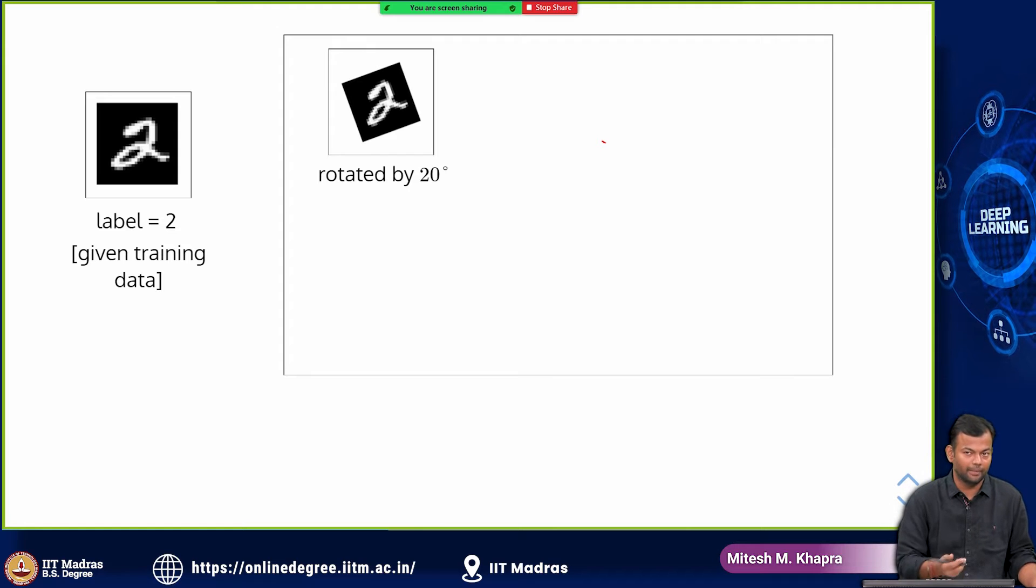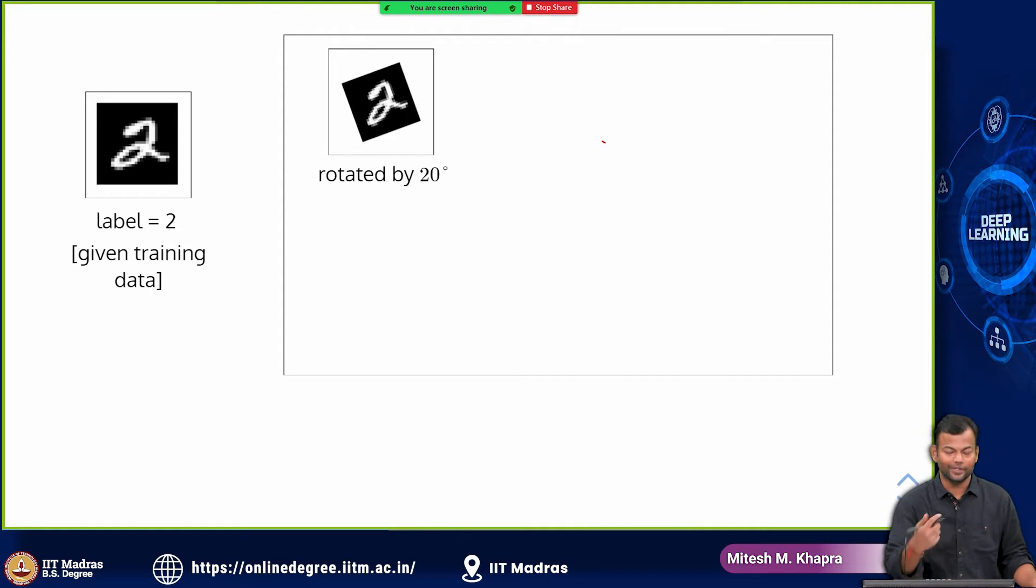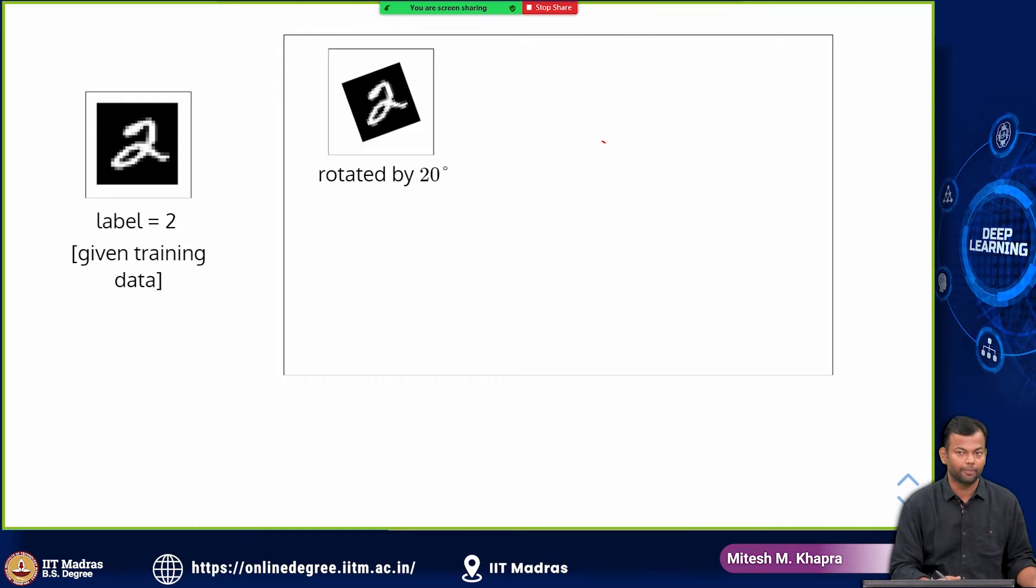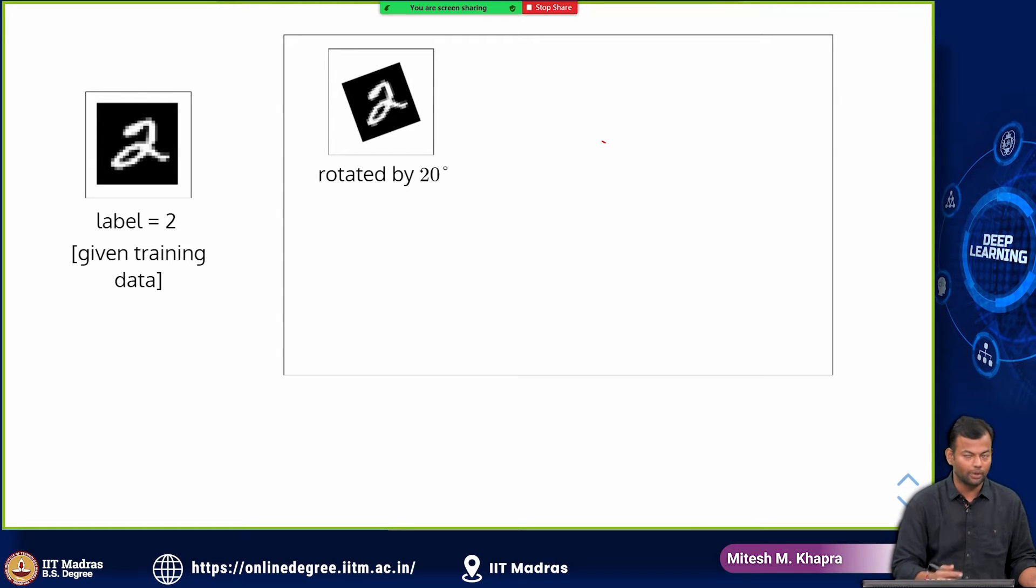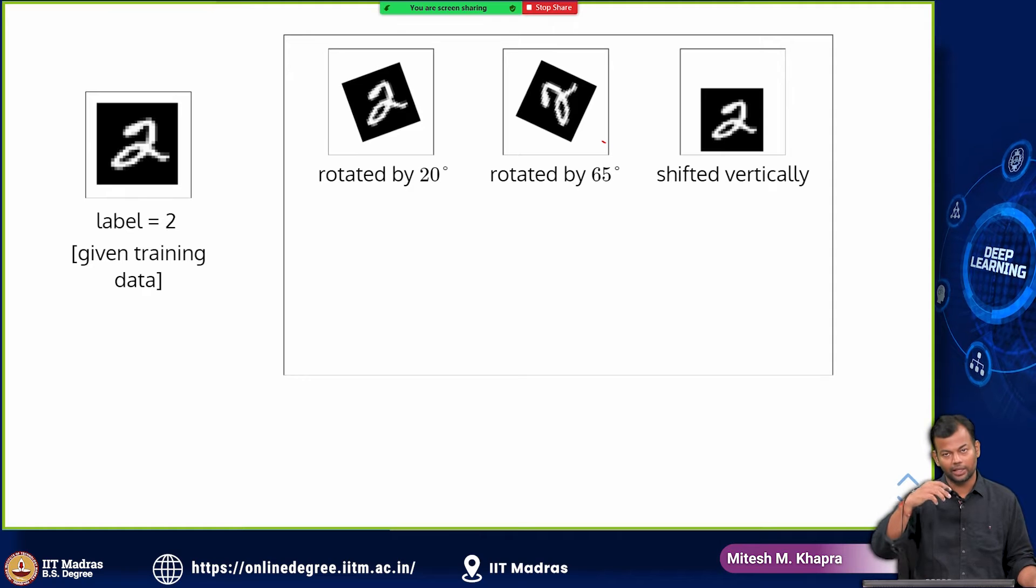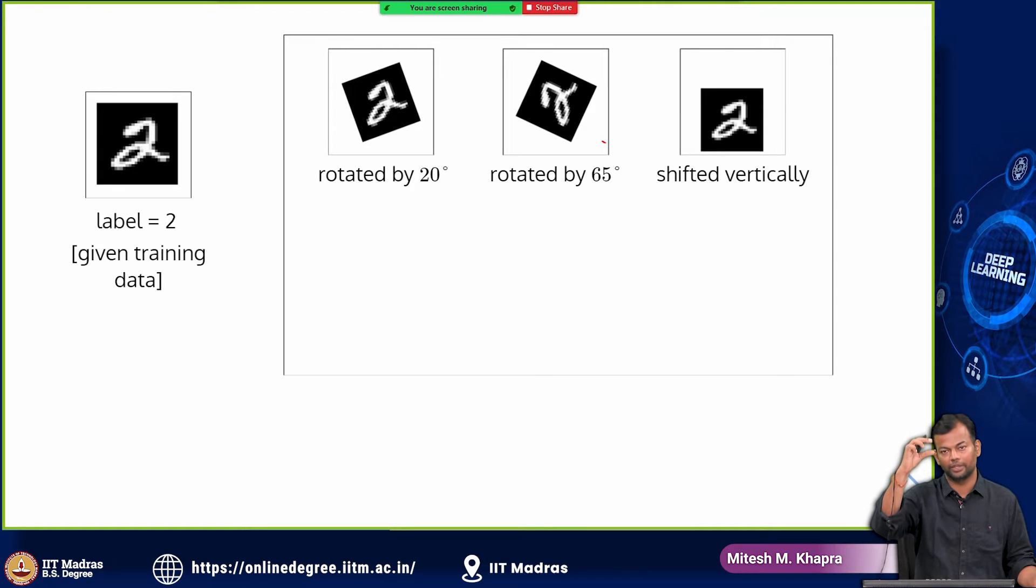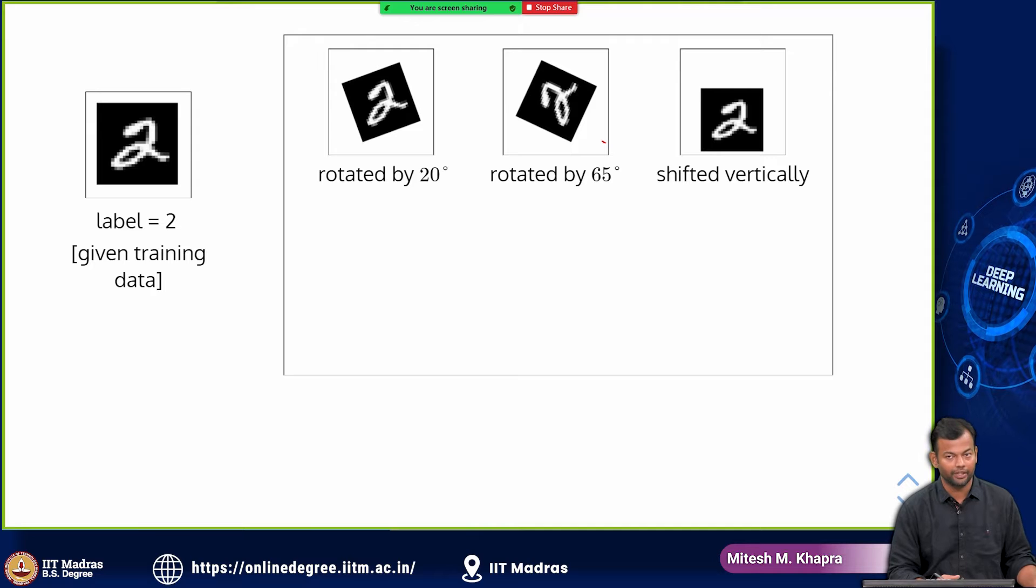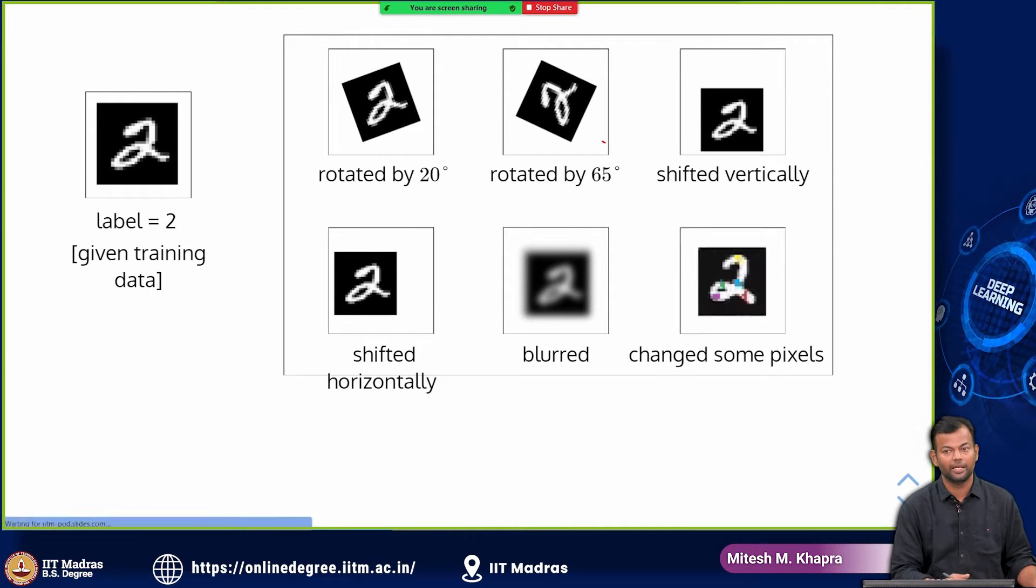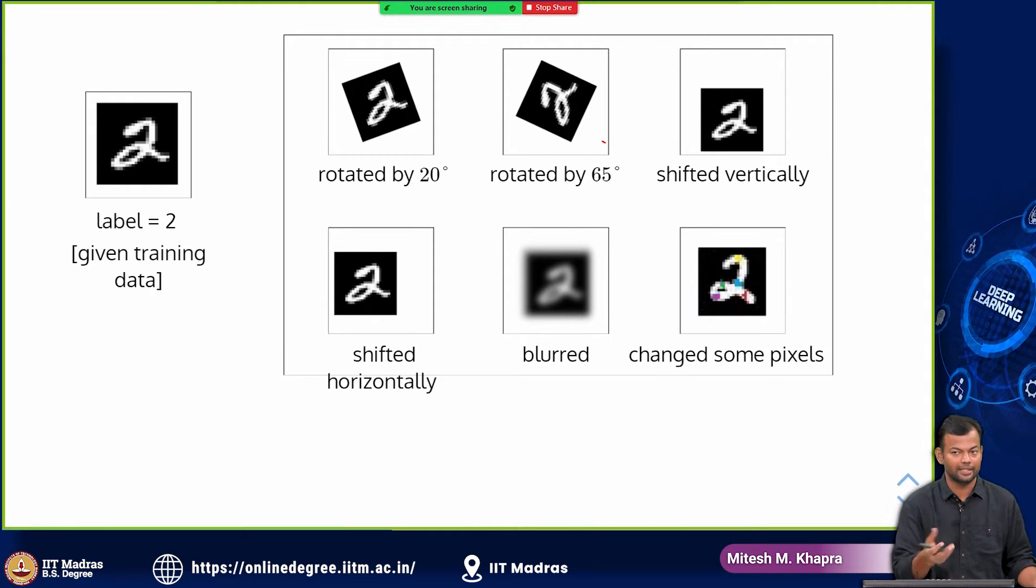You know that even if I rotate the image by a small amount, of course for some things like 6 and 9, if you rotate by 180 degrees then you will have a problem, but for most digits you will not have this problem. You could shift it vertically, you could shift it horizontally, or you could blur the image. You could also change some pixels and add some noise.